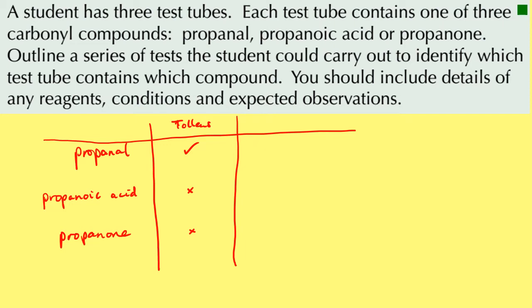Next, we take samples of the remaining two unknown compounds and add a spatula of solid sodium carbonate to each. The propanoic acid would fizz and we identify the carbon dioxide gas by bubbling it through lime water — but nothing would happen with the propanone. So using the sodium carbonate and lime water test, we know which one of the remaining two was propanoic acid, which means the third must be the propanone.